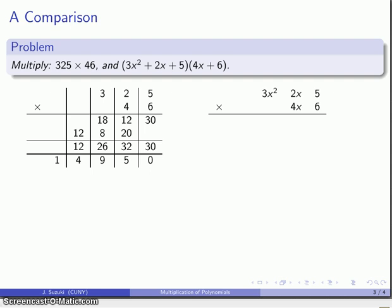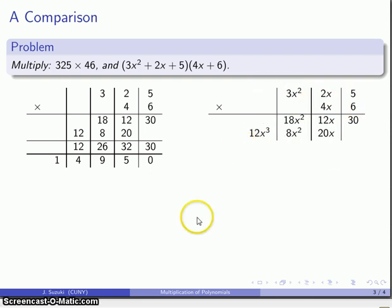All right, well what if I do the same thing using the polynomial? So again I'll split the polynomials into the different units. 6 times 5 is 30, 6 times 2x is 12x, 6 times 3x² is 18x², 4x times 5 is 20x, 4x times 2x is 8x², 4x times 3x² is 12x³. And notice that the numbers are the same in both places.